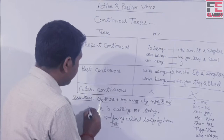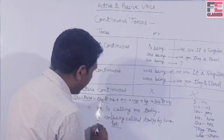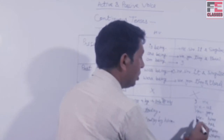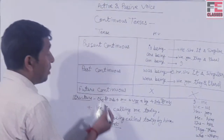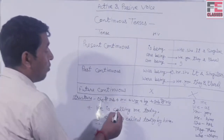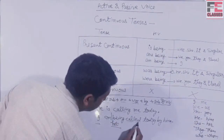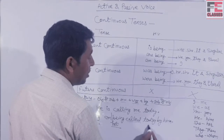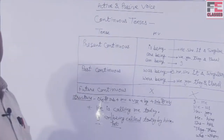Example: 'He is calling me today.' Rule के अनुसार, object 'me' को subject 'I' में बदल देंगे। 'I' के साथ helping verb 'am being' आएगी, फिर verb की third form 'called', उसके बाद 'today by him' — क्योंकि 'he' को 'him' में change करते हैं। Pronoun changes: I↔me, we↔us, he↔him, she↔her, they↔them, who↔whom, you stays you।